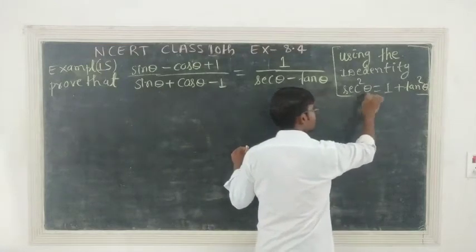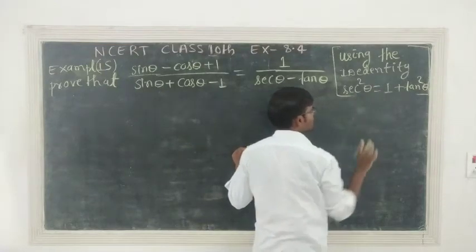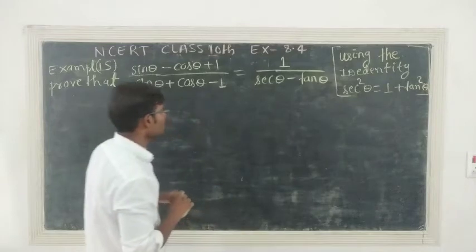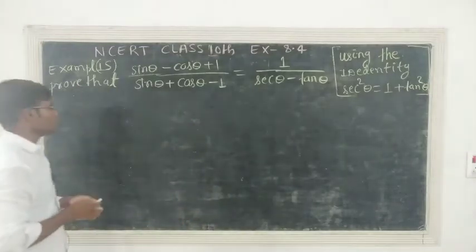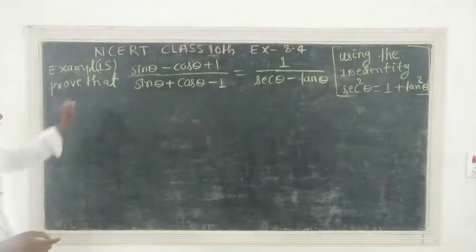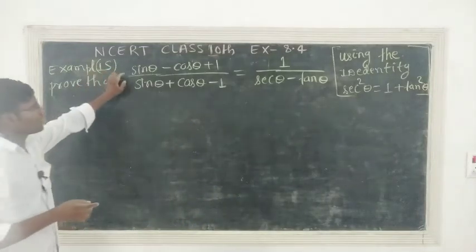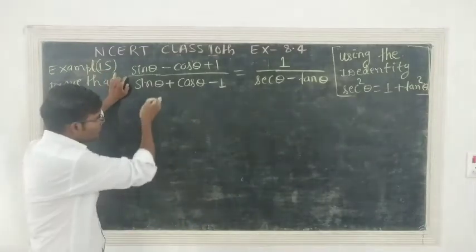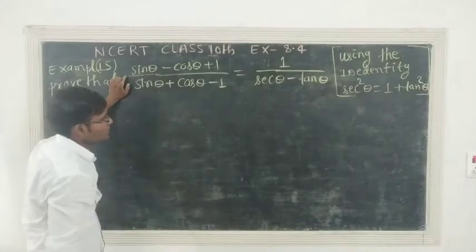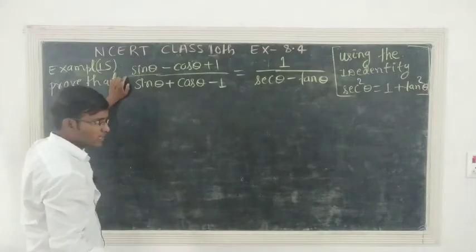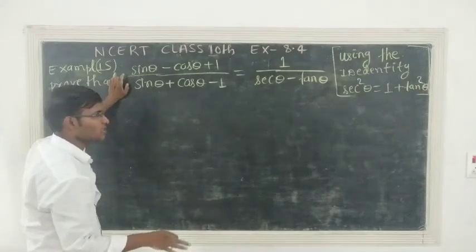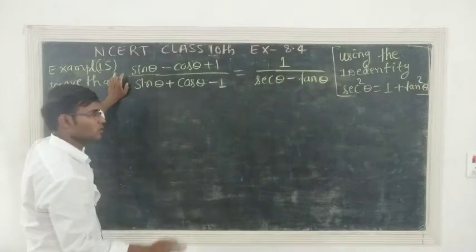Now we have to use that sec square theta is equal to 1 plus tan square theta. So think — what did we say? First of all, you change the question into sine and cosine. When you don't understand anything, change the question into sine cosine and work with LCM.